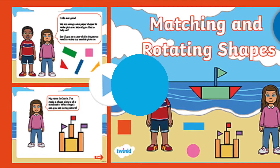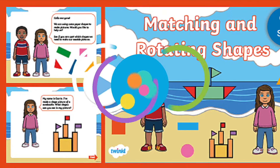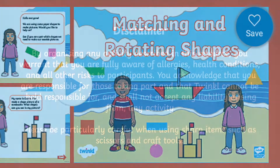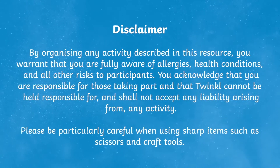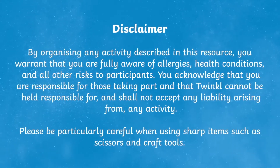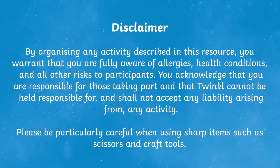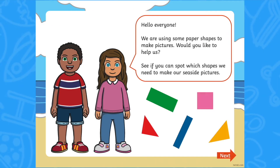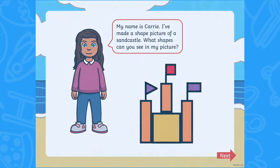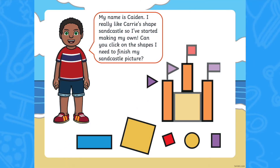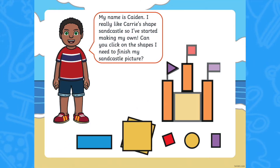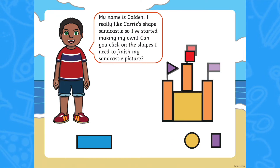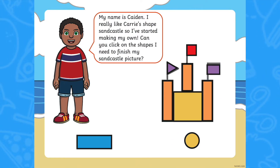Hi there, it's Fiona from Twinkle. Let's take a look at our matching and rotating shapes at the Seaside PowerPoint. This is a lovely resource to encourage children to explore spatial reasoning and 2D shapes. Throughout the colourful PowerPoint, children are invited to talk about the shapes they can see and how to rotate them to create shape pictures.